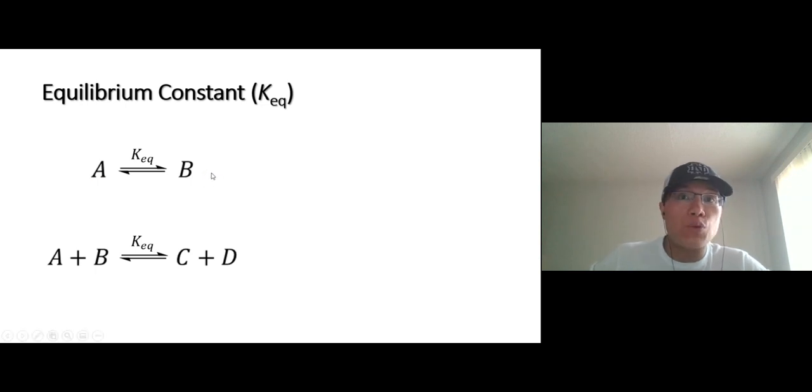Let's say if you have a reaction or an equilibrium from A go to B, how do you express the equilibrium constant expression? We're going to go the concentration of the product over concentration of the reactant, right? B over A.